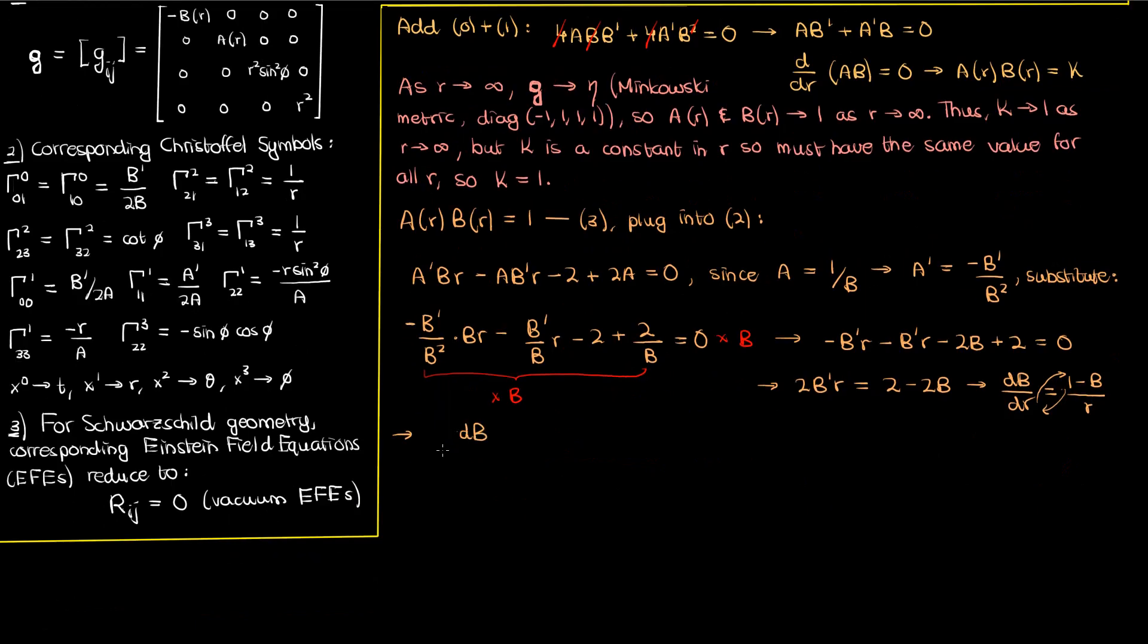We move the 1 minus B to the dB side and the dR to the R side. We then integrate both sides to get the negative of the natural log of 1 minus B. There's a negative out front because the B has a negative sign, so we need to take that out. On the right we get the natural log of R plus some constant I'll call capital K1.